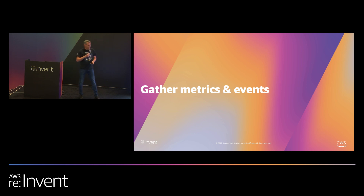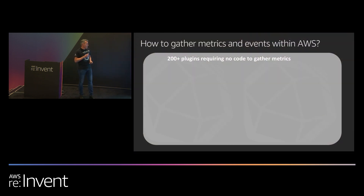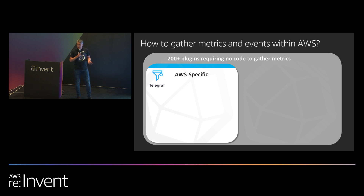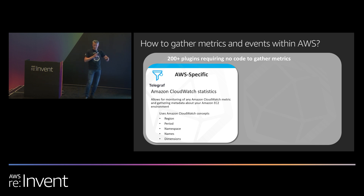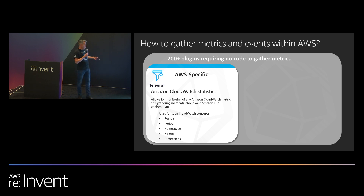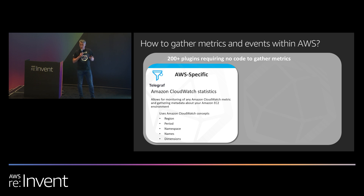Let's talk a little bit more about gathering metrics and events. If you're running within the AWS environment, there are two things you can do. First and foremost, we have a bunch of AWS-specific plugins. The most generic one is you can use it to tap into your CloudWatch stats. There's a ton of stuff in there — you can grab things like region, the namespace, the names of servers. In addition, there's the ECS plugin that also has Fargate compatibility, so you can deploy that plugin and gather specific information about those containers within your EC2 environment.